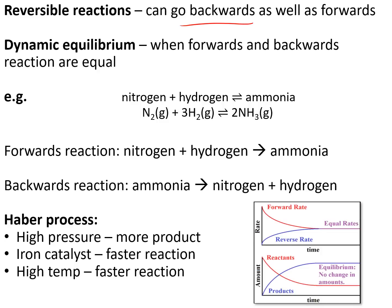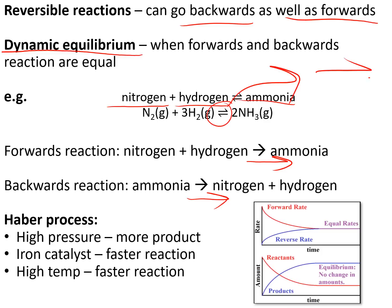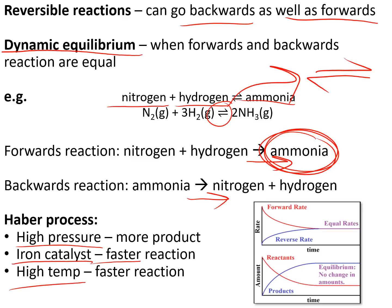Reversible reactions are ones that can go backwards as well as forwards. When the backwards rate and forwards rate reach the same speed, we say they've reached dynamic equilibrium, where the concentrations of reactants and products stop changing. An example is nitrogen and hydrogen forming ammonia — the forwards reaction makes ammonia, but the backwards reaction turns it back into nitrogen and hydrogen, shown by the double-headed arrow. The Haber process uses this to make ammonia, using high pressure to make more products, a catalyst to make it faster, and high temperature to make it faster.